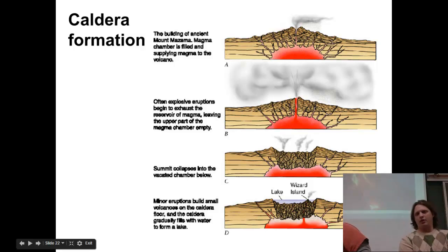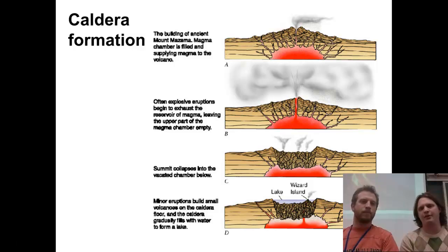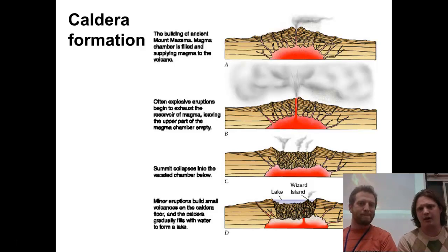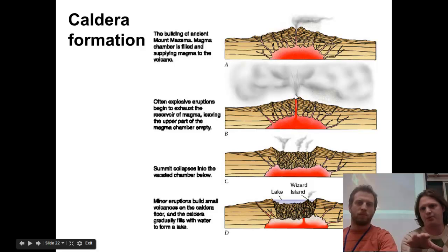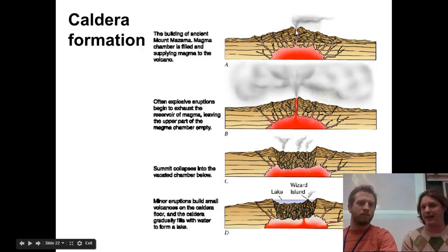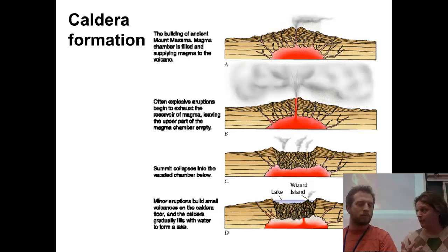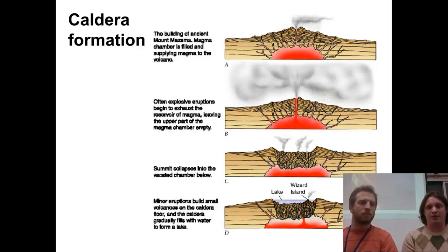Now we're taking a look at caldera formation. We can see in these pictures the breakdown and evolution of creating a caldera. Down in the center highlighted in red, that's the magma chamber. And then we have the pipe going from the magma chamber up towards the top. We have some kind of volcanic eruption where a lot of that magma is ejected out of the volcano — pyroclastic flow, ash, lava flows, etc., all comes out.